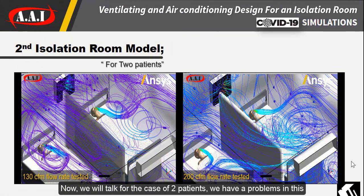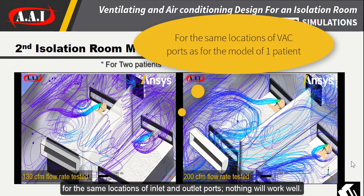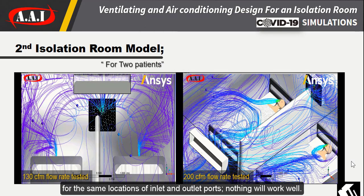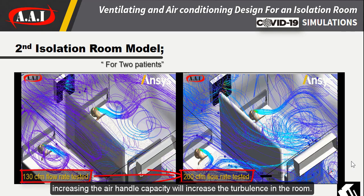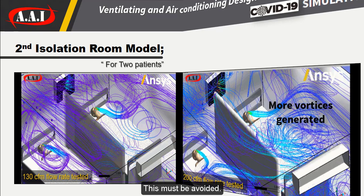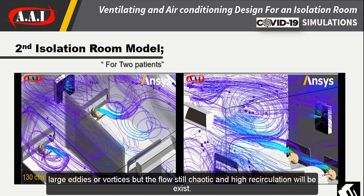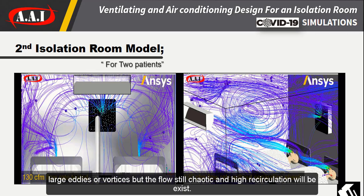For the case of two patients, there are problems with this model. For the same locations of inlet and outlet ports, nothing will work well. Increasing the air handling capacity will increase the turbulence in the room — this must be avoided. Also, placing a separation sheet between the patients will eliminate some large eddies or vortices, but the flow is still chaotic and high risk.